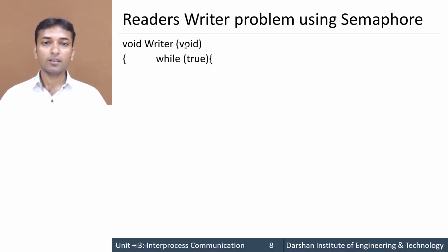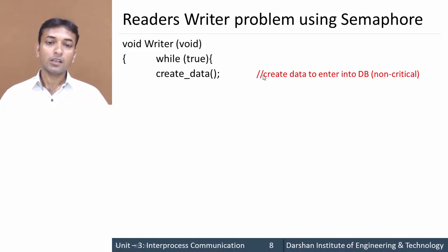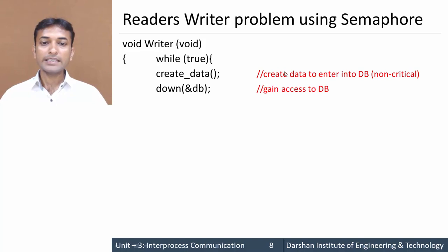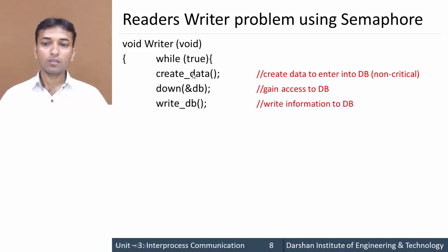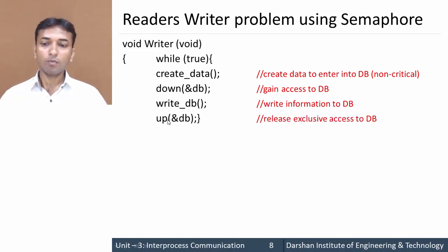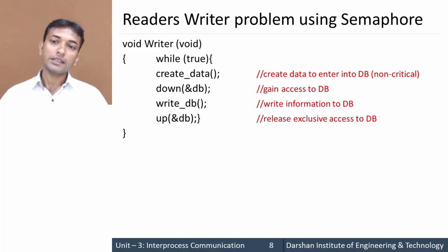The void writer(void) function is called whenever a process wants to access the database in writing mode. While true: create_data — it creates data to enter into the database outside the critical section. Then down(db) — the process gains exclusive access to the database so no other process can access it. Then write_db — the data is written into the database. Then up(db) — once writing is finished, db is released so another process can access the database. This is how the reader-writer problem is solved using semaphores.